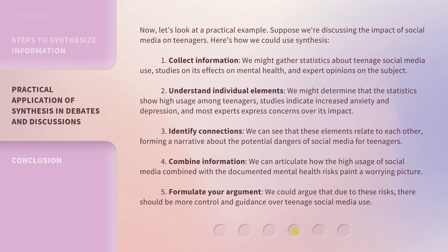Step 3: Identify connections — we can see that these elements relate to each other, forming a narrative about the potential dangers of social media for teenagers. Step 4: Combine information — we can articulate how the high usage of social media combined with the documented mental health risks paint a worrying picture. Step 5: Formulate your argument — we could argue that due to these risks, there should be more control and guidance over teenage social media use.